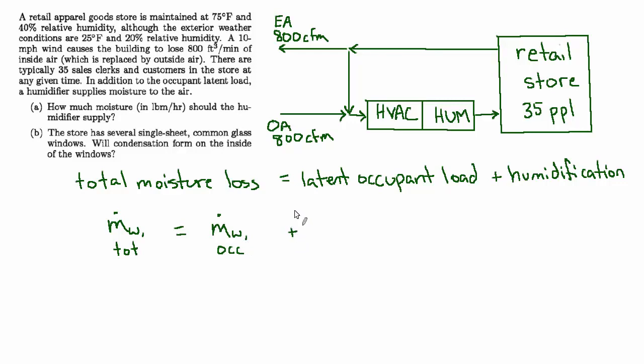Plus the mass flow rate of humidification—how much water vapor are we adding to the air? So again, ṁ_water of the humidification system. So we'll specify the occupant latent load first, and then we'll calculate the total moisture loss, and then we'll subtract and find the humidification load.